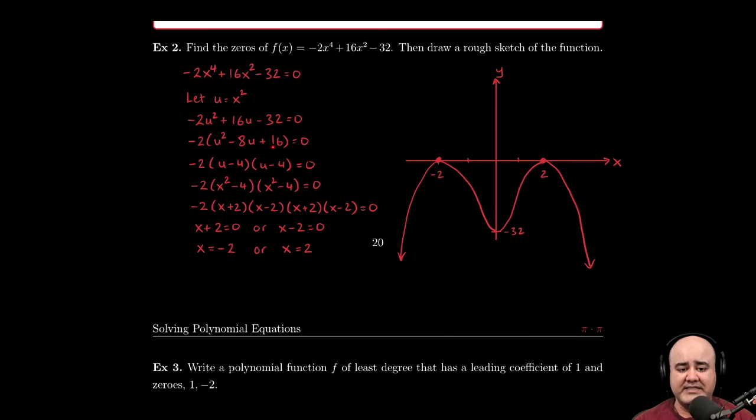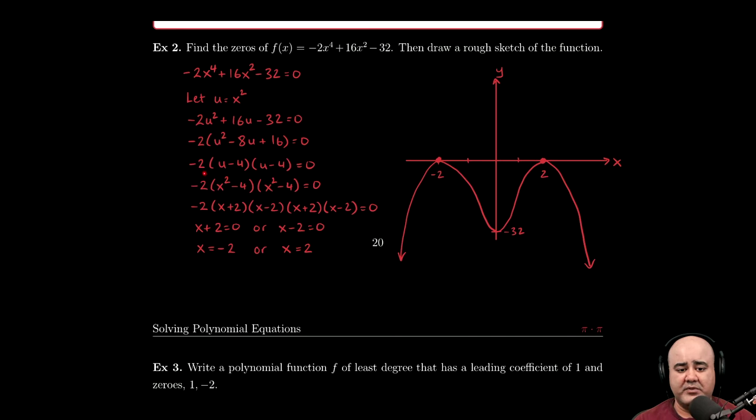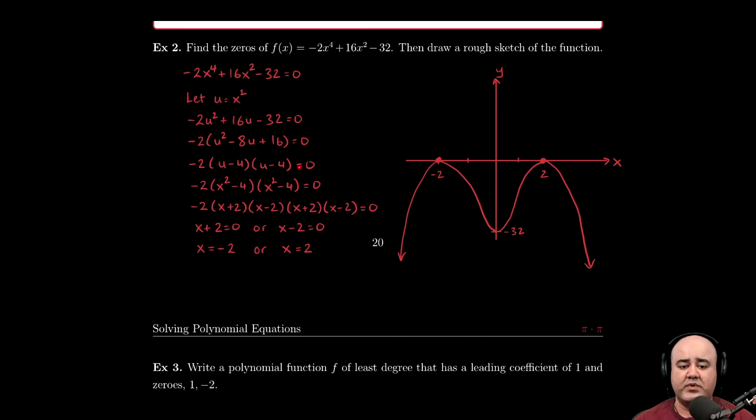Hopefully we recognize this as a perfect square. This is the square of u minus four. So that's exactly what we write here. We factor it as negative two times u minus four times another u minus four equals zero.